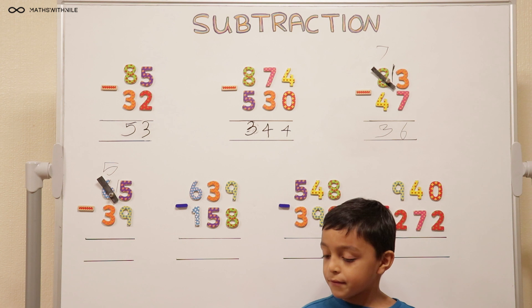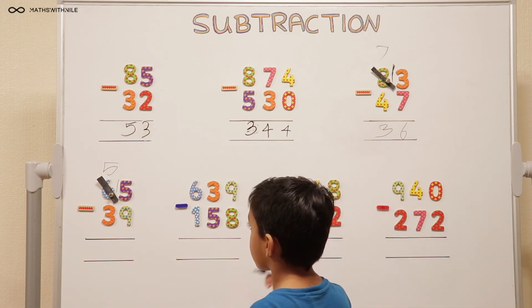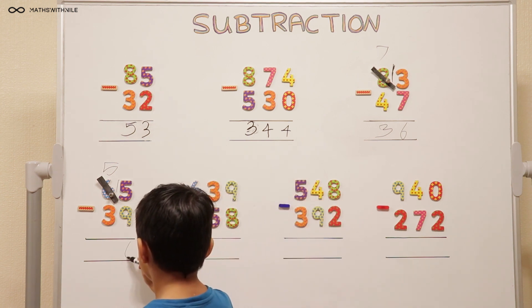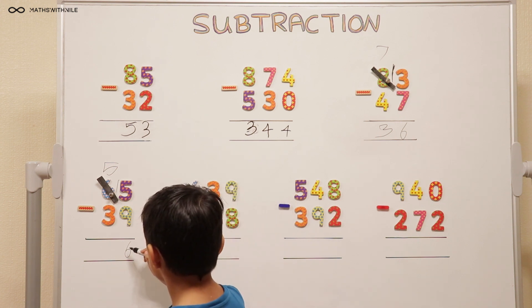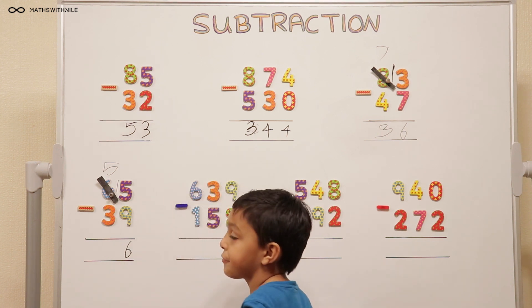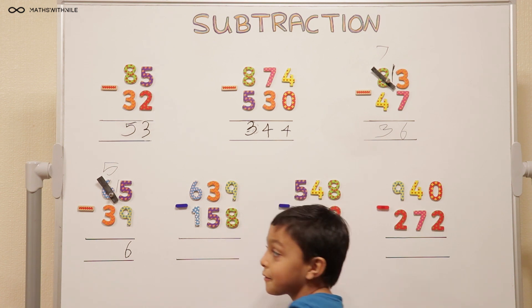We put that 1 next door. So 15 take away 9. 9, 10, 11, 12, 13, 14, 15. So 6. Very good. That's a really good counting up method that you're using. Can you make the 6 a bit bolder so we can see? And then? 5 take away 3 equals 2. Excellent.